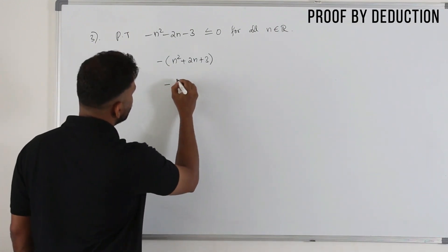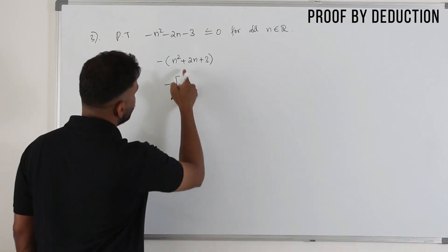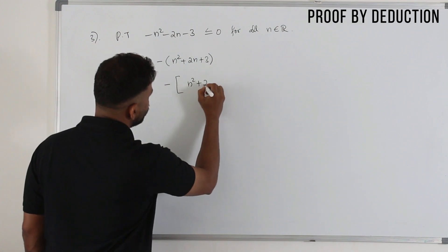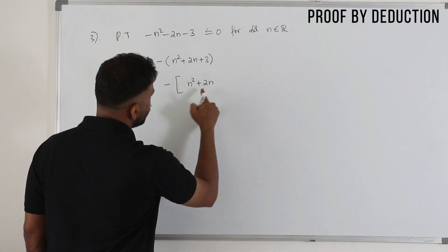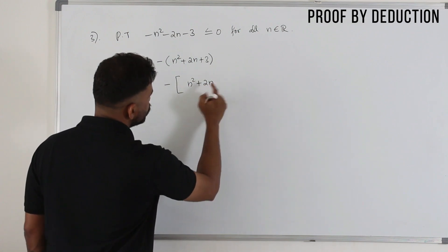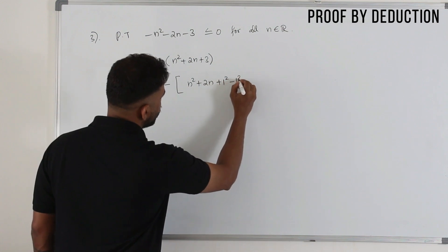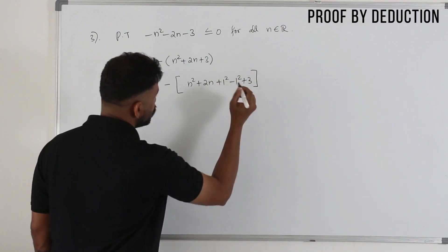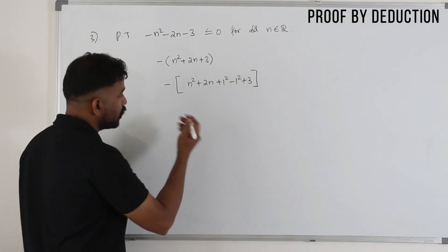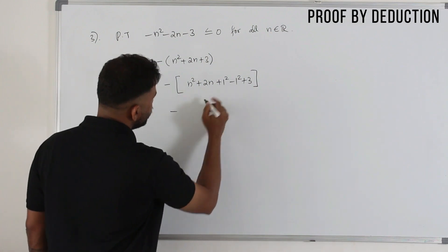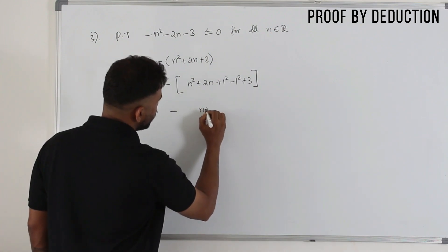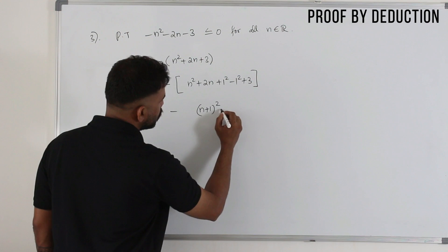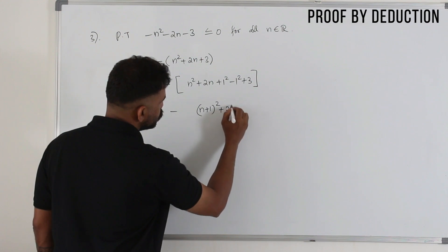I'm going to keep the negative sign outside and apply completing the square. For n squared plus 2n, half of 2 is 1, so I put 1 squared minus 1 squared plus 3. The three terms combine as n plus 1 whole square. Minus 1 plus 3 is 2.